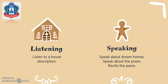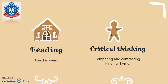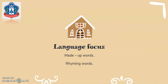Here are our learning objectives. Listening: listen to a house description. Speaking: speak about dream homes, speak about the poem, recite the poem. Reading: read a poem. Critical thinking: comparing and contrasting, finding rhyme. Language focus: made-up words, rhyming words.